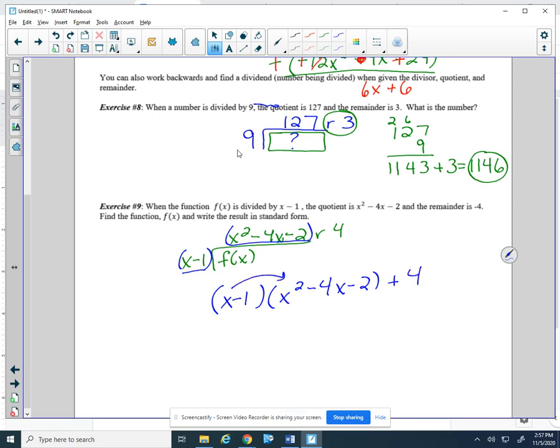We'll do the distributive property. That's going to give me x cubed minus 4x squared minus 2x. We don't distribute to the plus 4. That's going to come at the end.